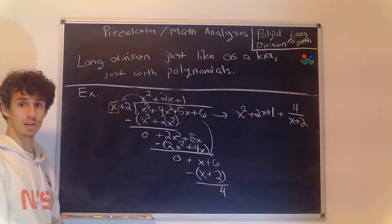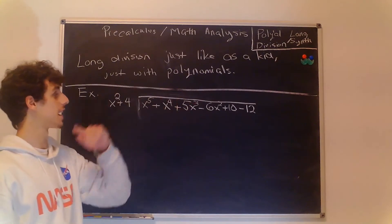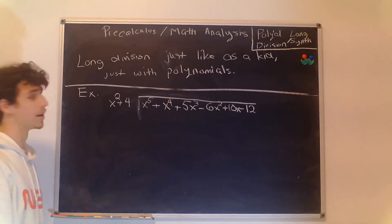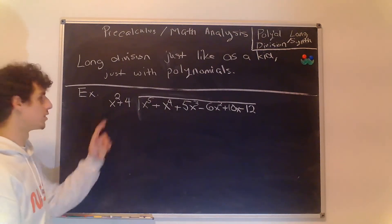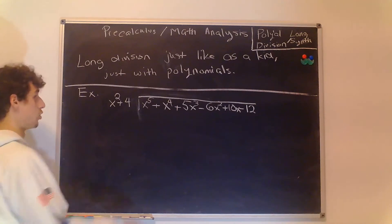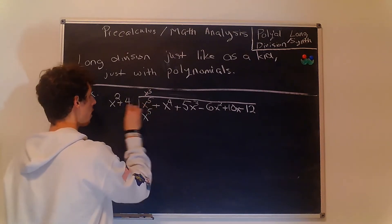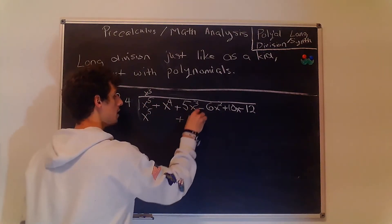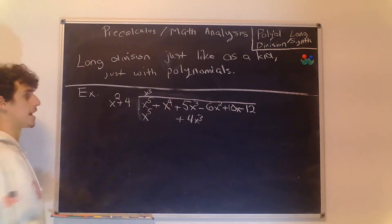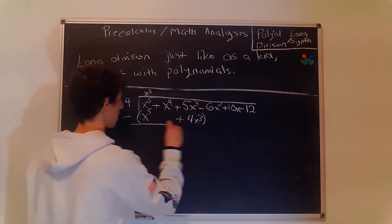Let's look at one more example of long division. For our second example we have x to the 5th plus x to the 4th plus 5x cubed minus 6x squared plus 10x minus 12, divided by x squared plus 4. Again we look at the first term of the divisor and the first term of the dividend. We need to multiply by x cubed, so that goes up here and gives us x to the 5th plus 4x cubed, which goes under our x cubed term. We group these and subtract, giving us 0.